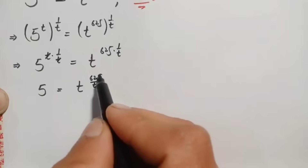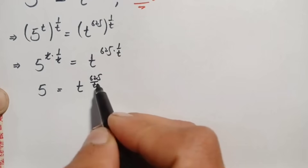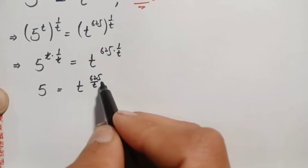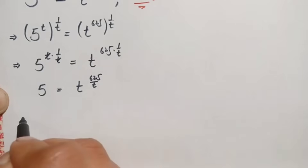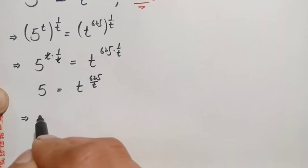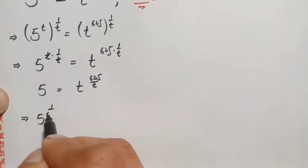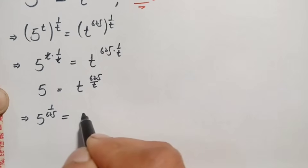To eliminate the power 625 from the right-hand side, we will raise both sides of this equation to the power 1 by 625. So this equation becomes 5 raised to power 1 by 625 is equal to t raised to power 625 divided by t, whole raised to power 1 by 625.